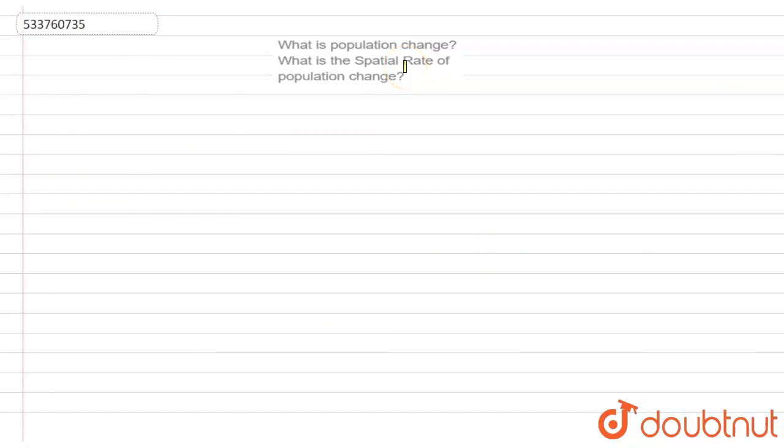Hello friends. So again, this is a human geography question. Basically, this is a population geography question. What is population change? Okay, let me highlight. Here are two parts. One is what is population change and other thing is spatial rate of population change.